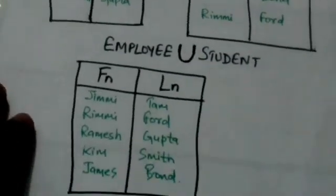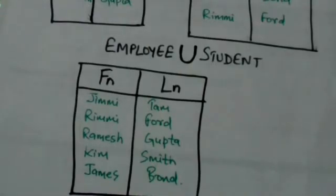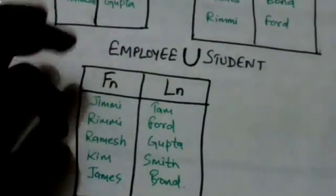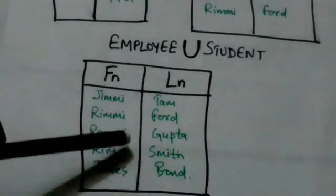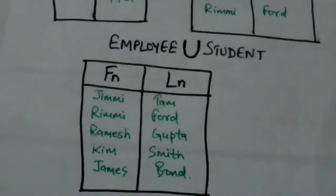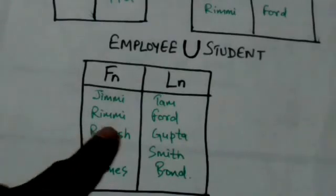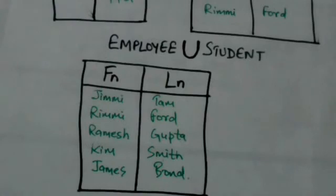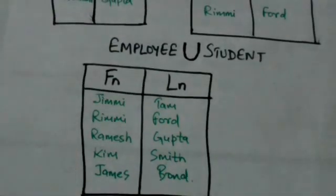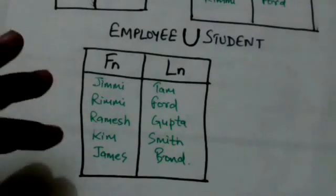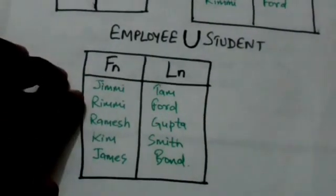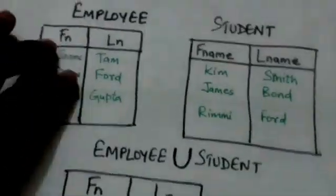The result of employee union student will be this relation. This resulting relation contains all tuples that are either in the employee relation, in the student relation, or in both. It does not contain any duplicate tuples — all tuples are distinct. The resulting relation has the same attribute names as the first relation, employee.